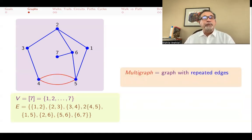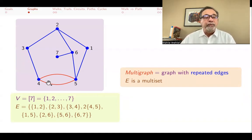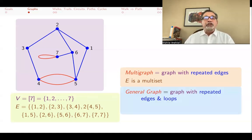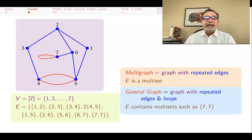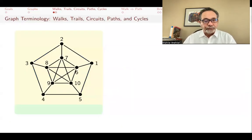A multigraph is a graph with repeated edges. In this case, the set of edges E is not a set anymore — it's a multiset, meaning you allow repeated elements. For example, you might allow two copies of the edge {4,5}, making it a multigraph with multiple edges. A general graph is one where you allow not only repeated edges but also loops. This time E can contain multisets like {7,7} — a multiset with just one element appearing twice.